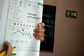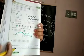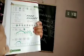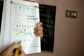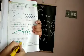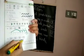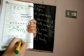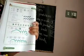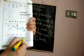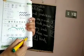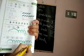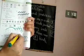Second number line problem: two plus five plus three. Start from zero, reach two. From two, jump five steps — one, two, three, four, five. Then jump three more steps — one, two, three. You have reached ten. Write ten in the box.